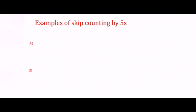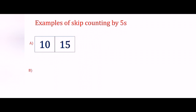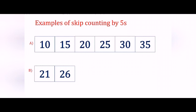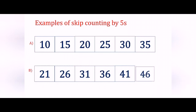So let's see some examples of skip counting by 5s. You have to add 5 to get the next number from the previous number. If I have 10, I add 5 each time: 10, 15, 20, 25, 30 and 35. Let's see the next example starting at 21. 21 plus 5 is 26, 26 plus 5 is 31, 36, 41 and 46.